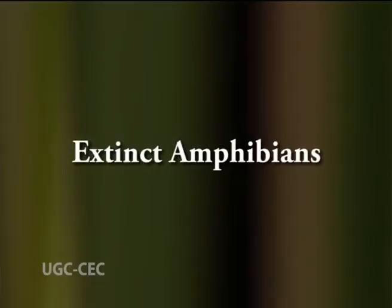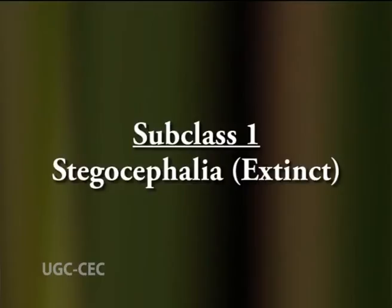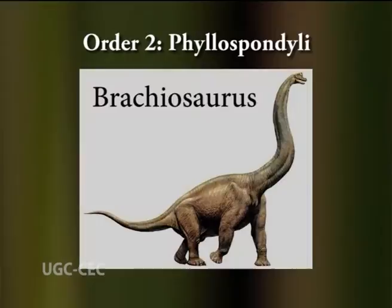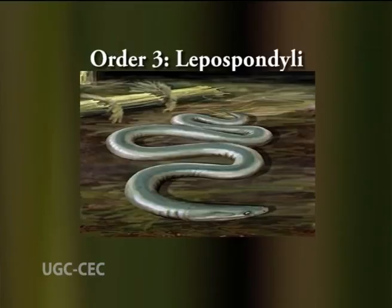Extinct Amphibia includes subclass 1, Stegocephalia, which is now extinct. Stegocephalia are extinct lizard-like or salamander-like amphibia. It further has three orders: Order 1, Labyrinthodontia — example, Eriops; Order 2, Phylospondyli — example, Brachiosaurus; Order 3, Lepospondyli — example, Oistocephalus.